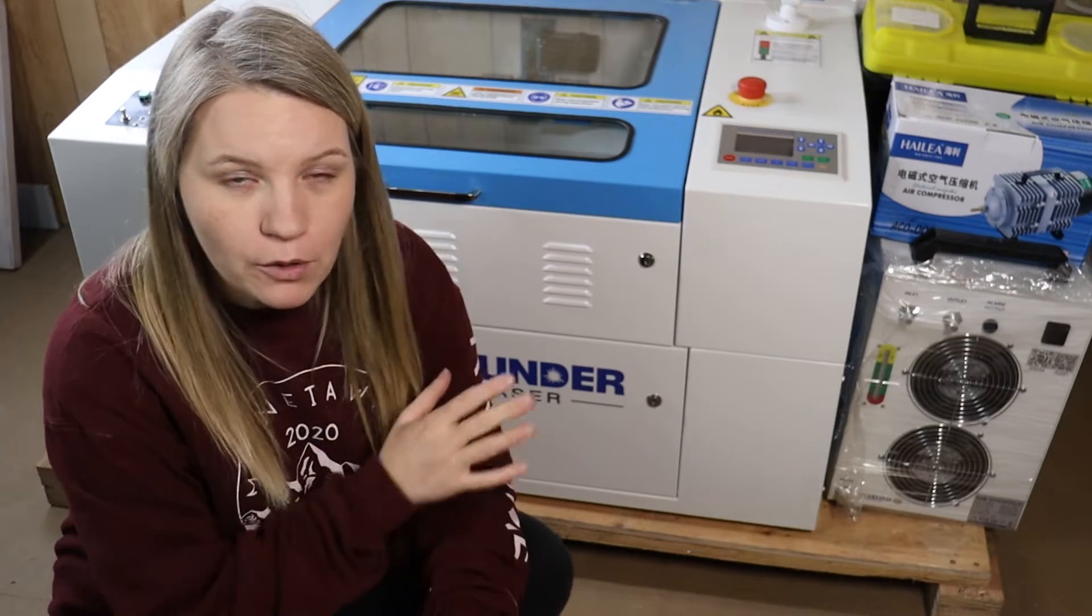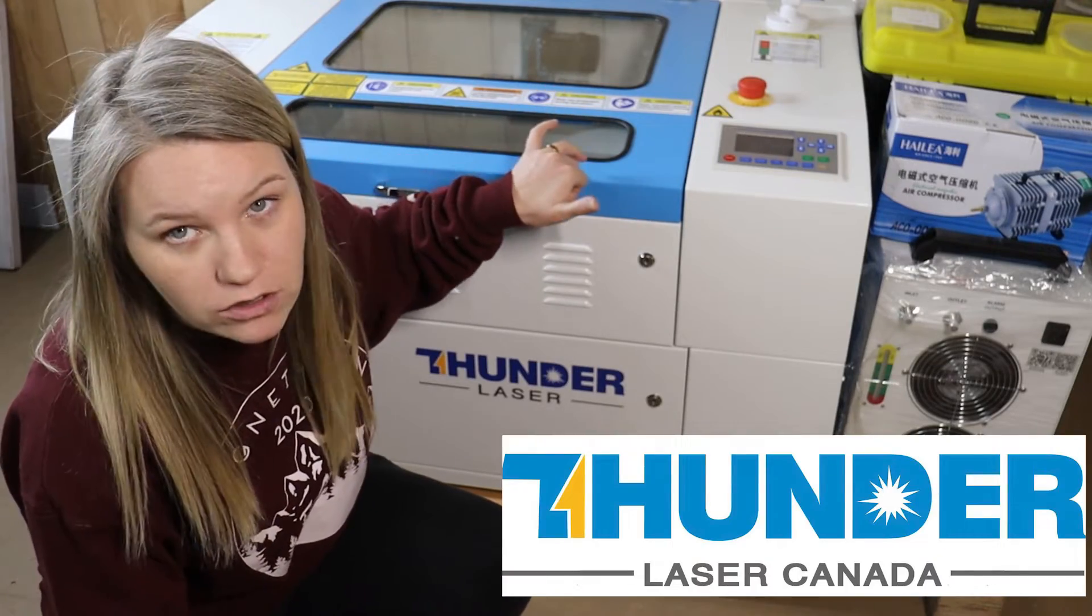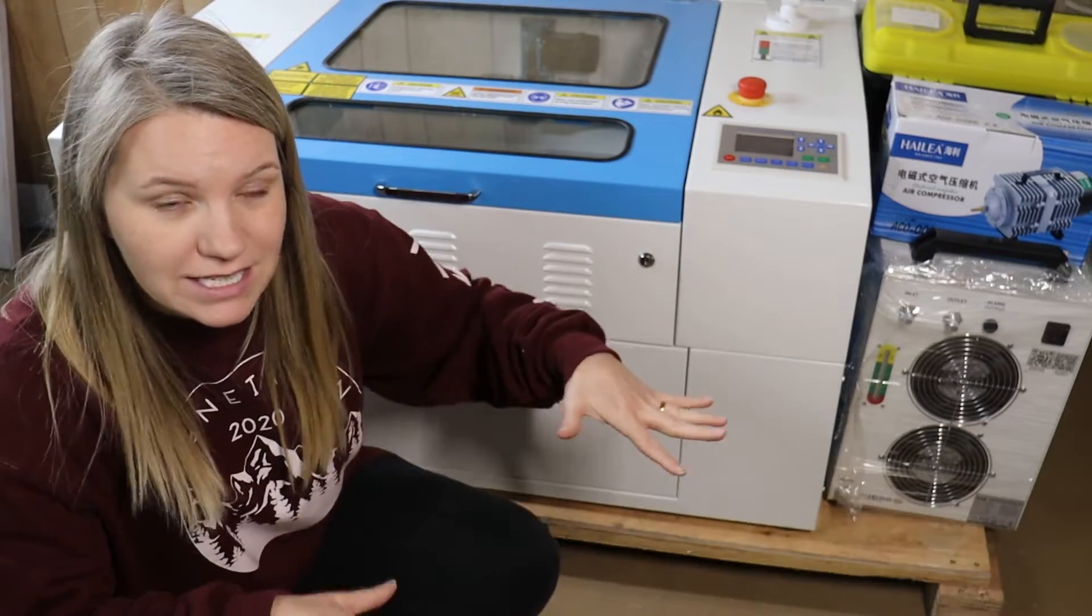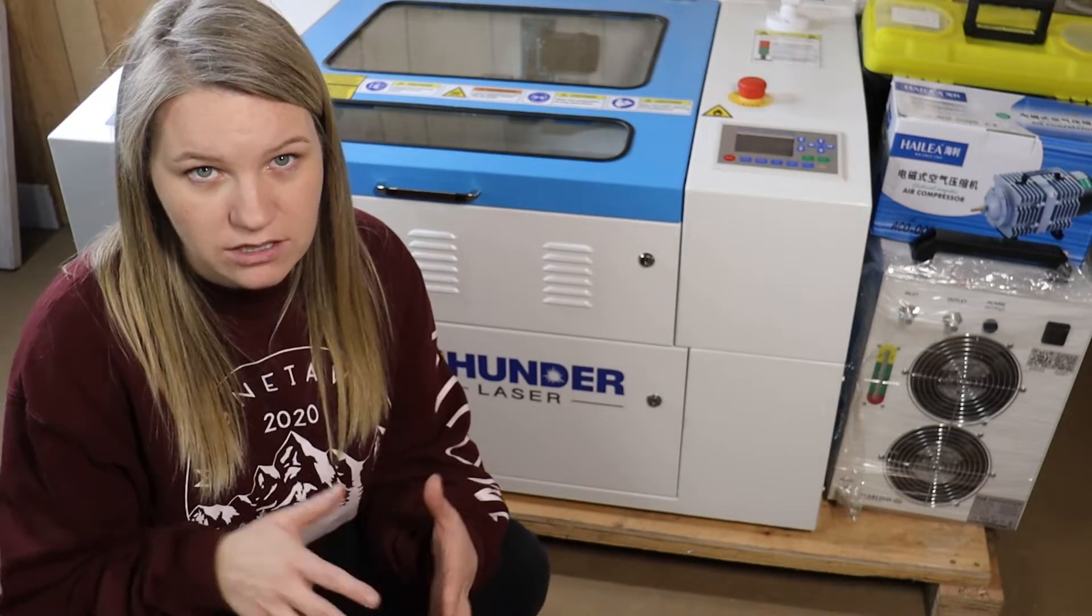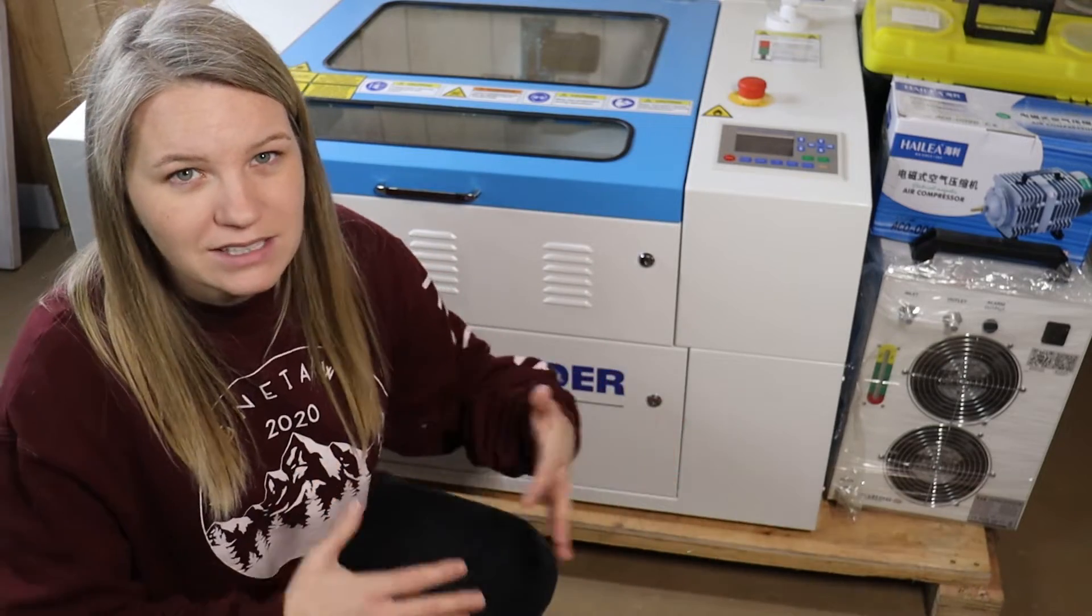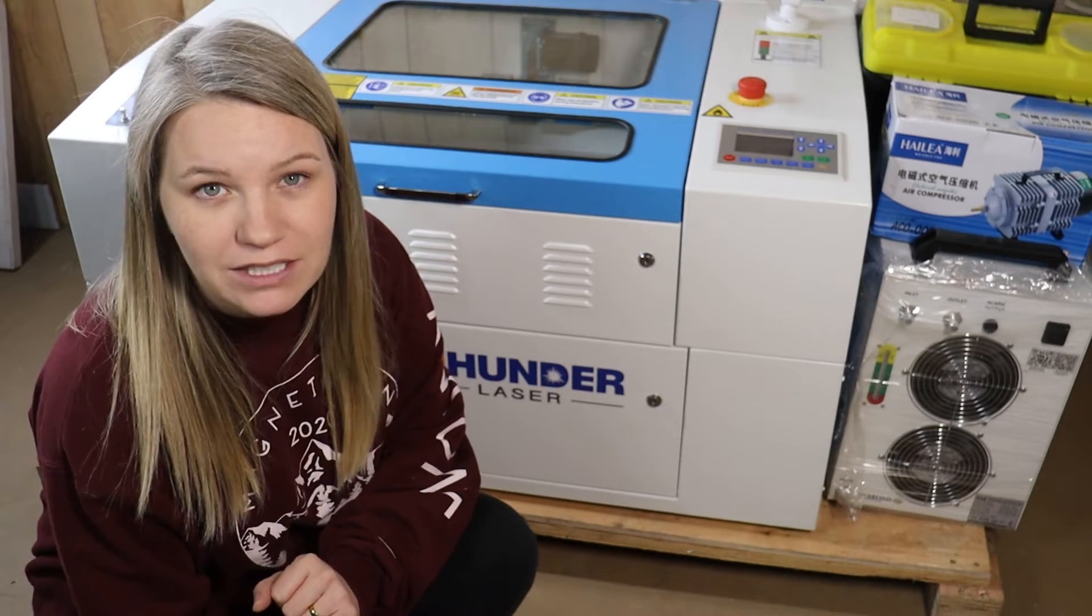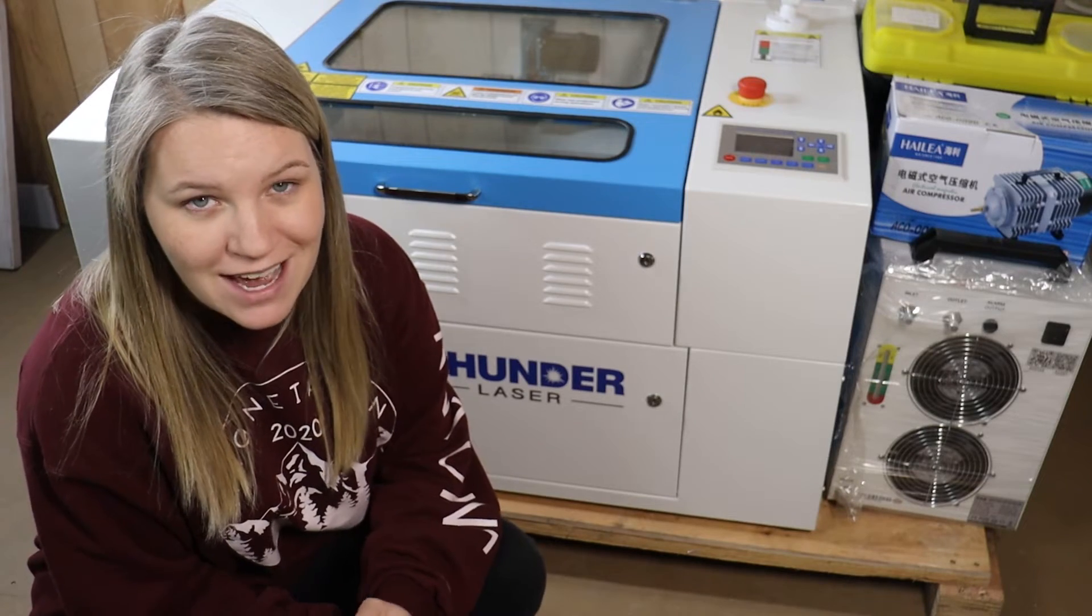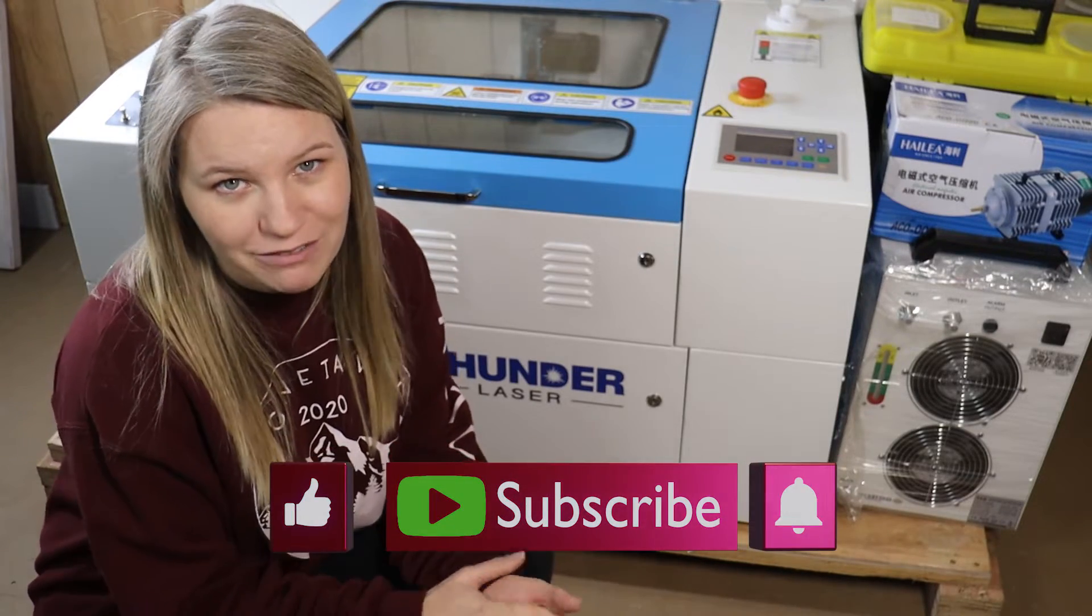In this second video we're going to be going through the setting up of the Thunder Laser and how to get it working so you can actually start creating projects. I have here the Thunder Laser Nova 24. It is a desktop model so it does fit on a desktop. I have it here on the crate, the bottom of the crate that it was shipped in, because I just haven't had time to build a sufficient enough work table for it. I thought I would just get the laser up and running and see how it goes before I actually design my workspace. Let's get started.